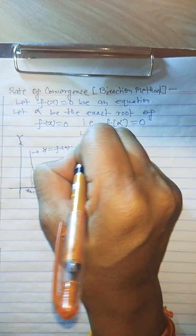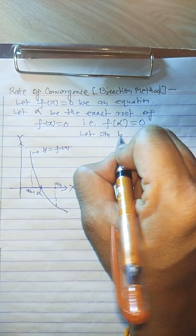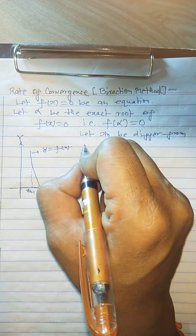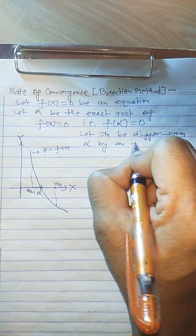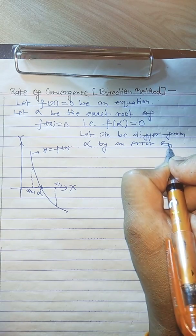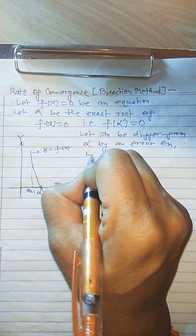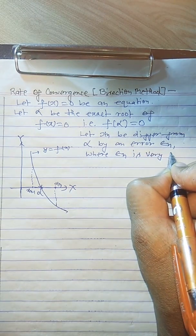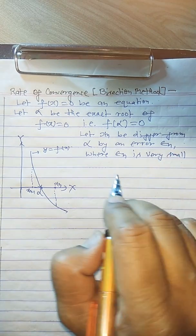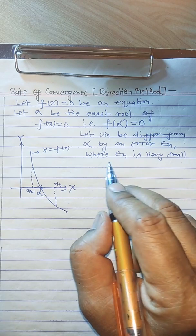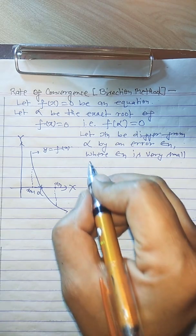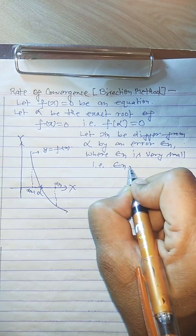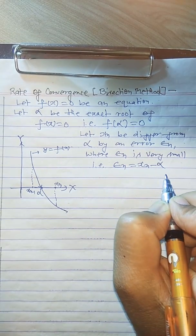Here we assume: let x_n differ from alpha by an error epsilon_n, where epsilon_n is very small. In numerical analysis, errors are quantities which are very, very small. That is, x_n differs from alpha by an error epsilon_n, meaning epsilon_n is equal to x_n minus alpha.